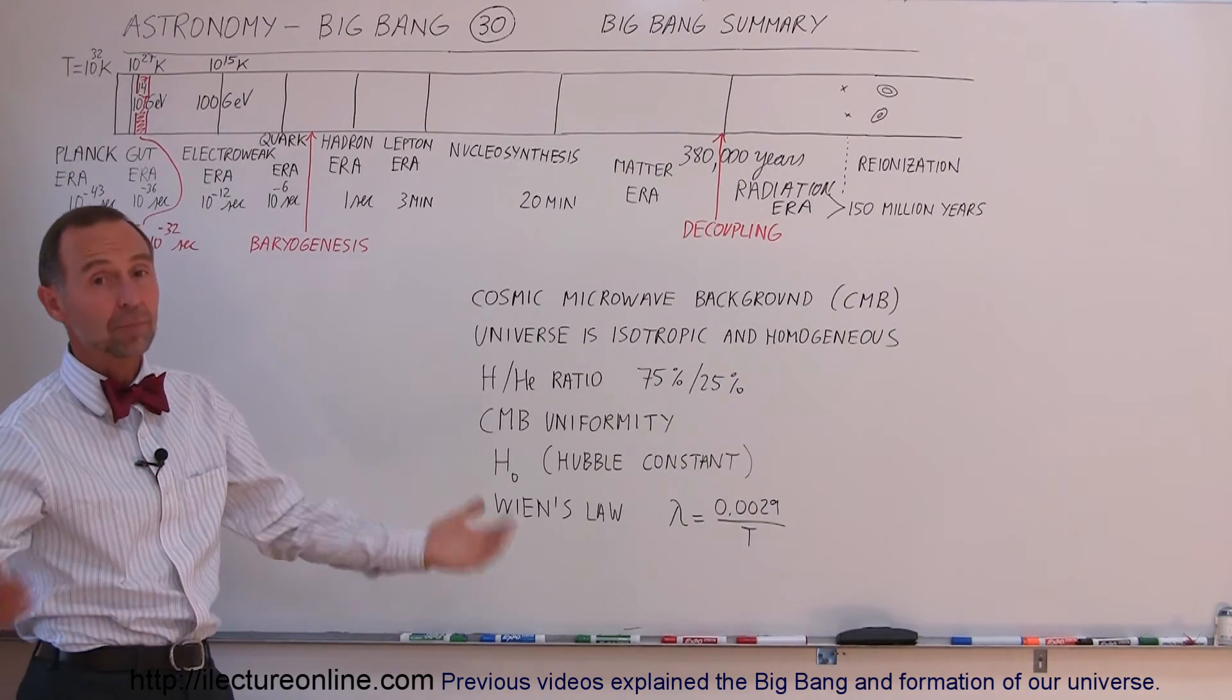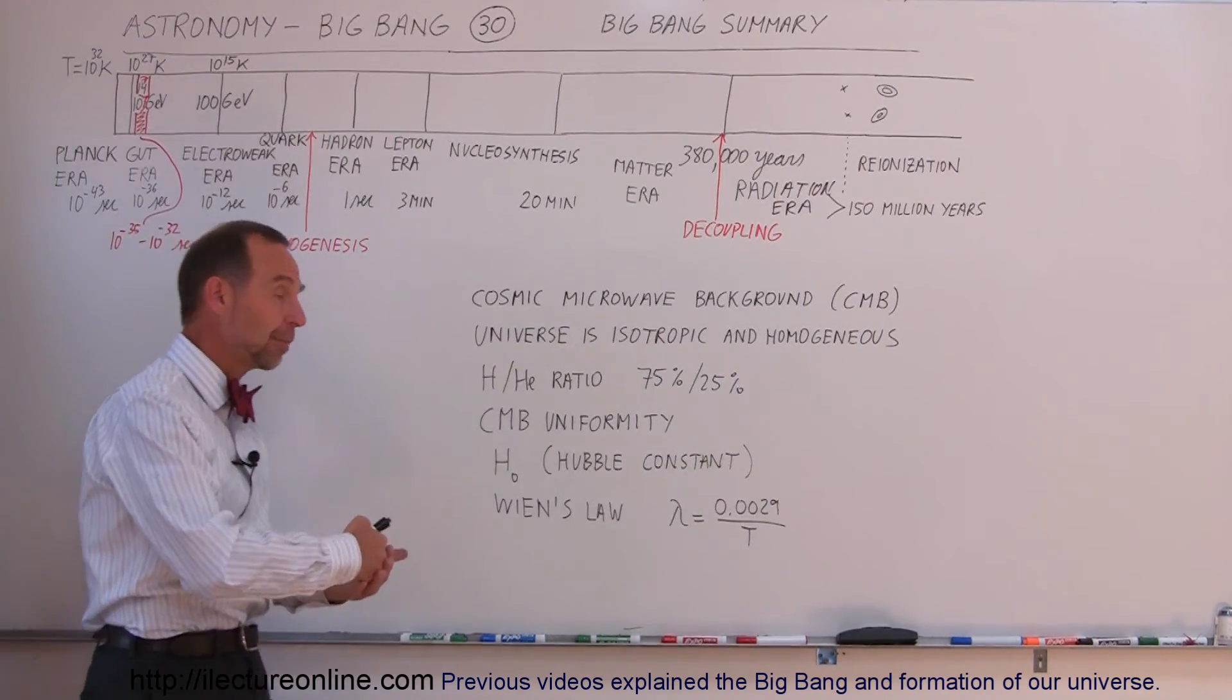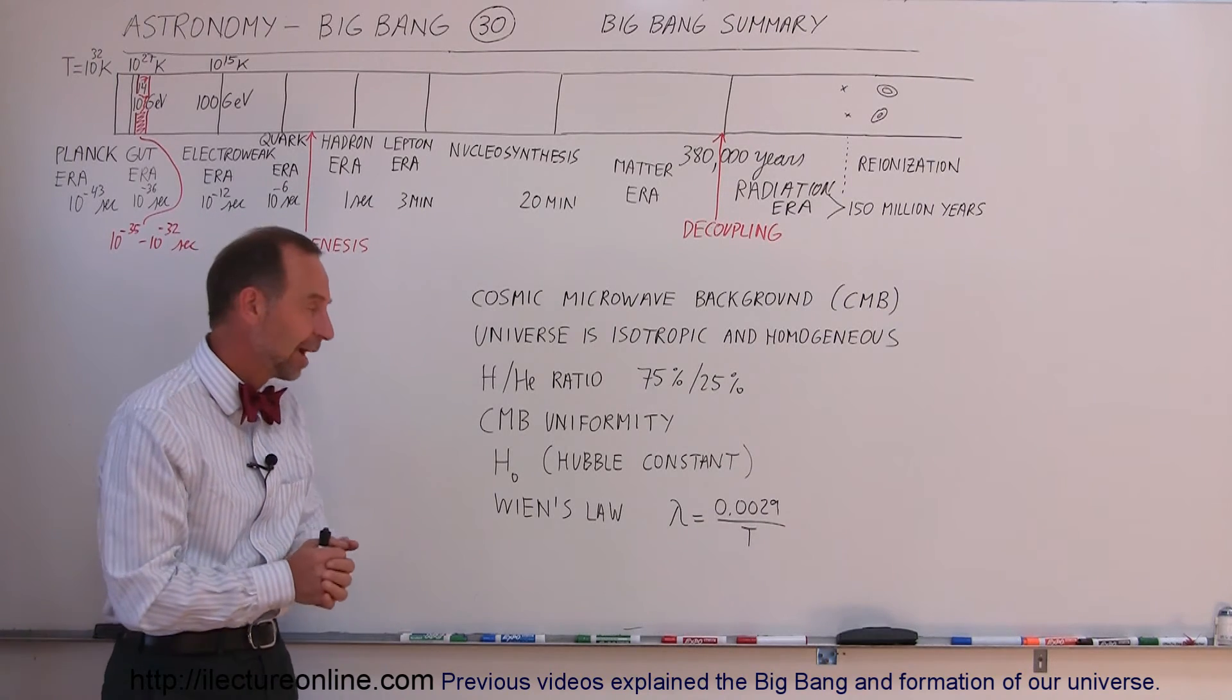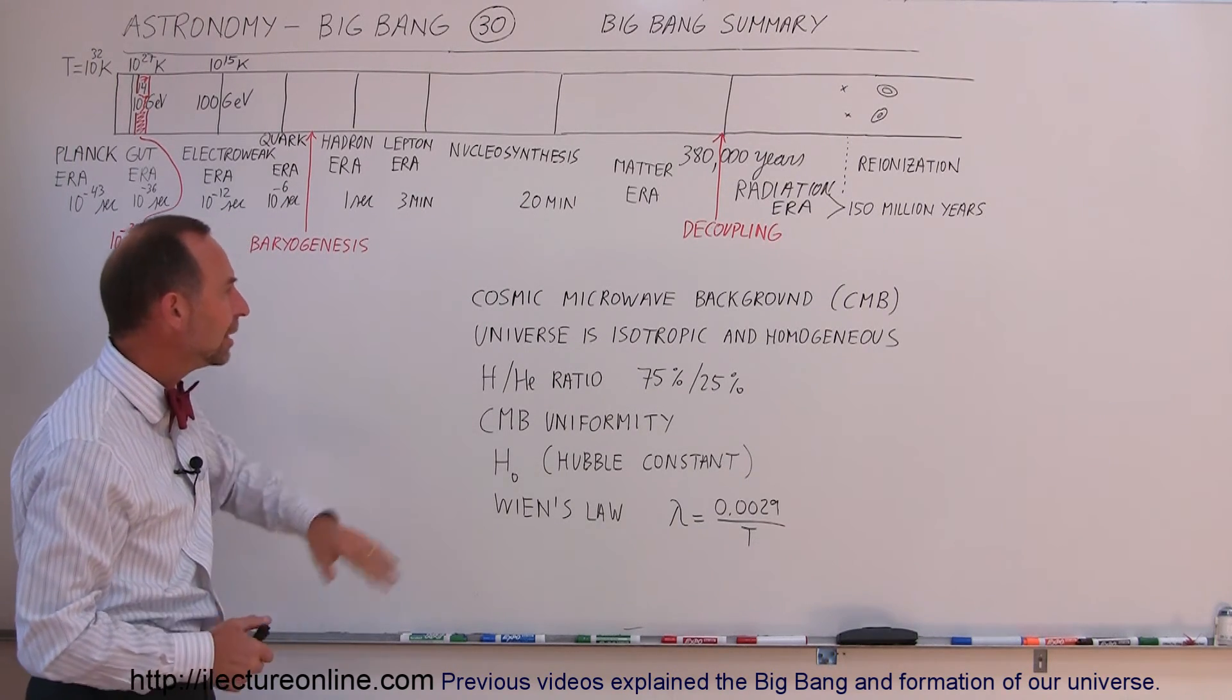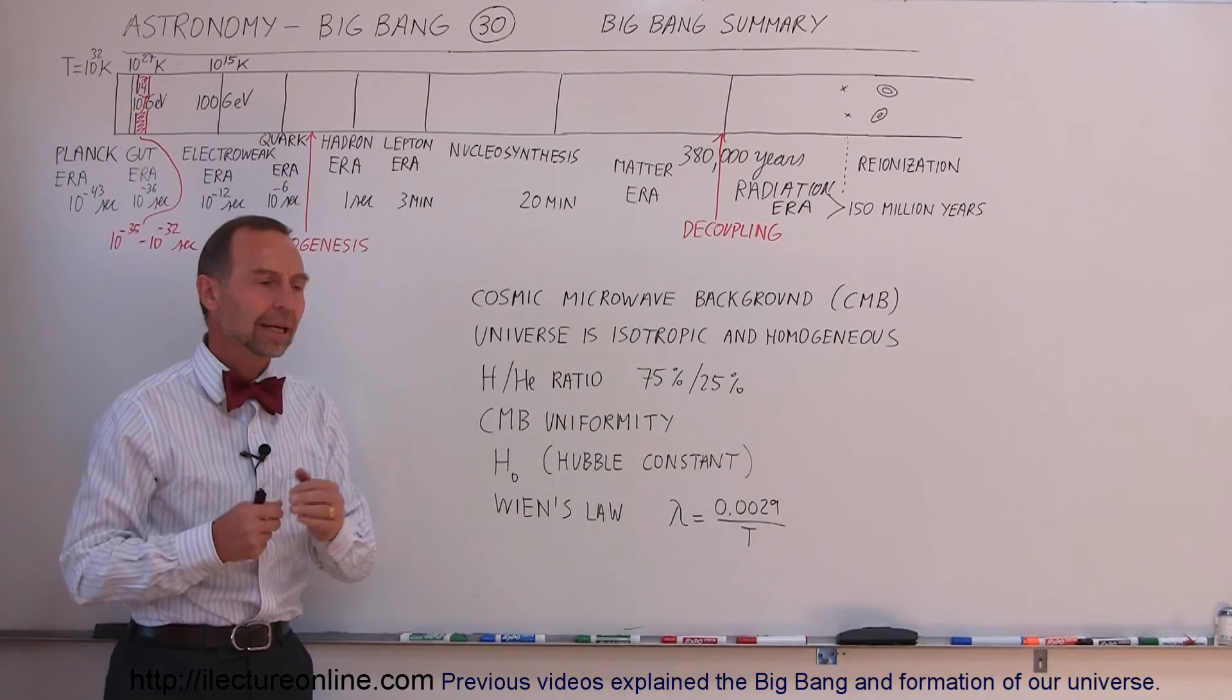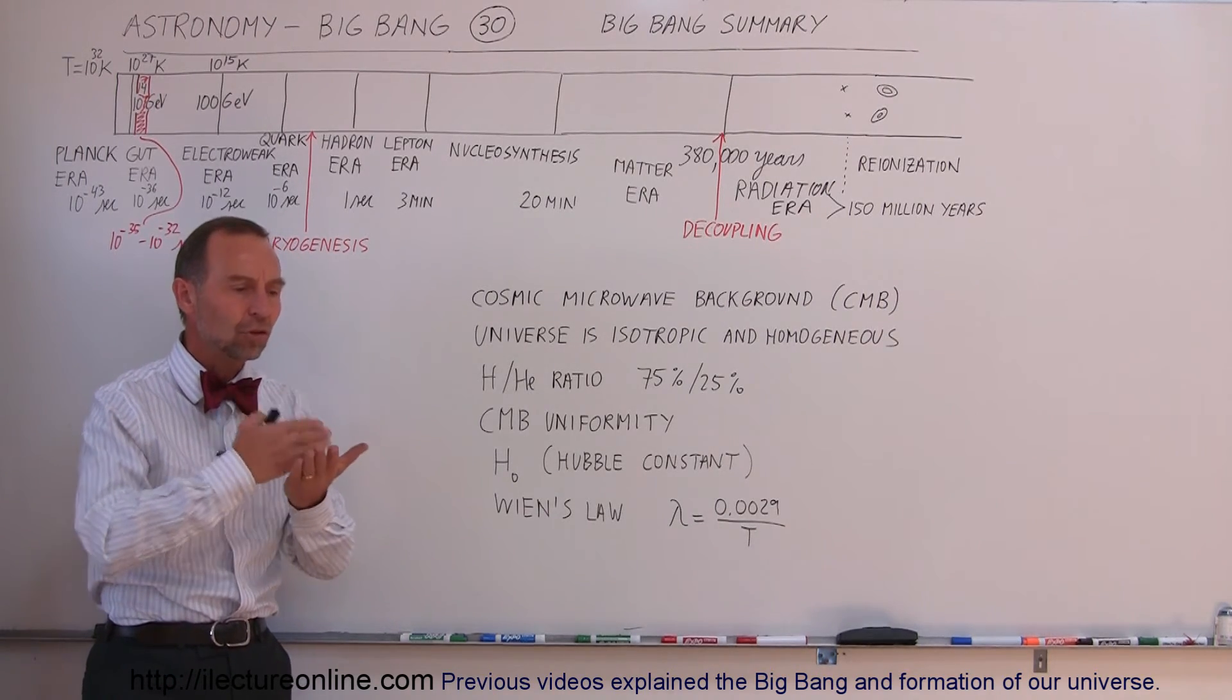And we see the results of that now because the makeup of the Universe is about 25% helium and 75% hydrogen. The extreme uniformity of the CMB, the cosmic background radiation, is beyond belief. It is just so uniform.